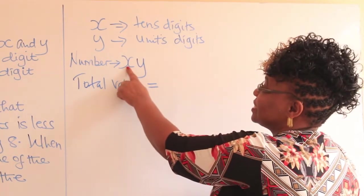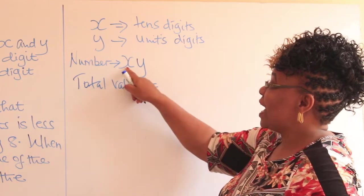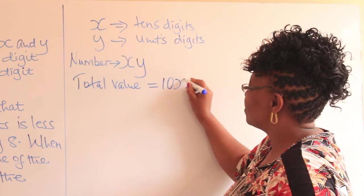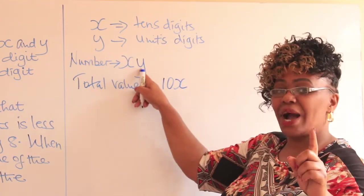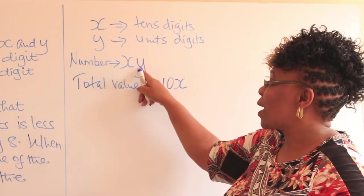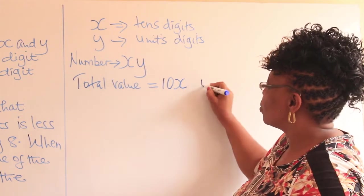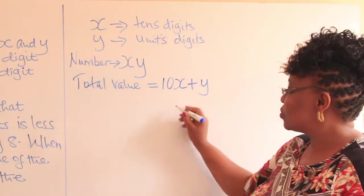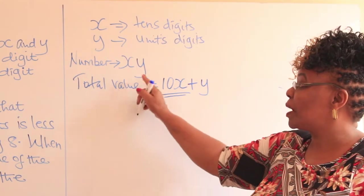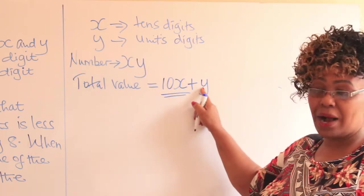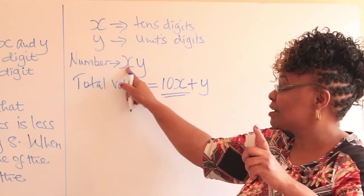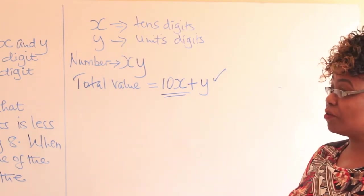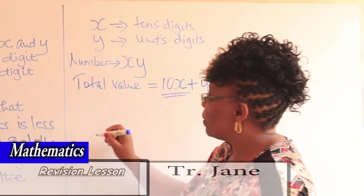For the total value: x is the tens digit, so x times ten gives us 10x. Y is the ones digit, so y times one gives us y. Adding these together, the total value of our number is 10x + y.